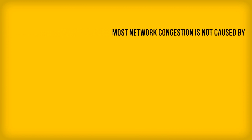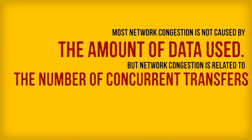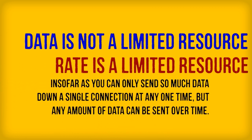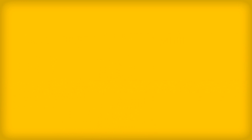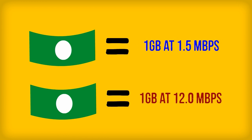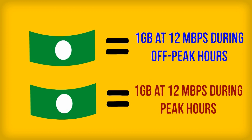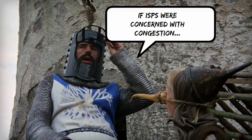Every TCP stream gets a fair share of the pipe. That means no matter how big the file size you're transferring or streaming, you only take up as much bandwidth as the network can support at that time. What ends up causing congestion in most cases is not the amount of data used, but the number of people, programs, and devices using the network at the same time. Data caps charge you for total traffic — not your speed.